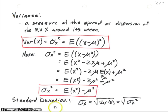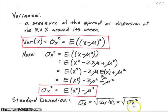The standard deviation is defined as sigma sub x, and it's the square root of the variance — the square root of sigma sub x squared.